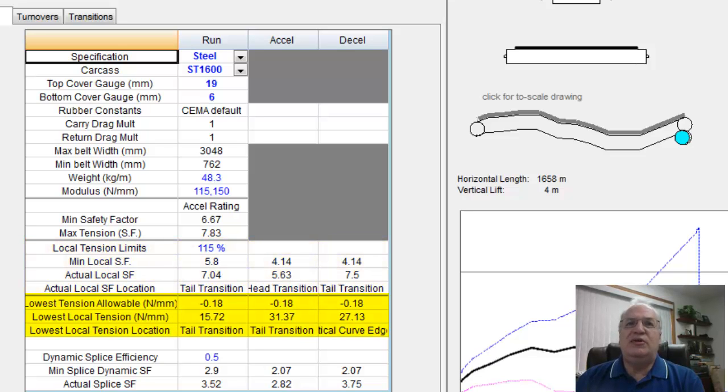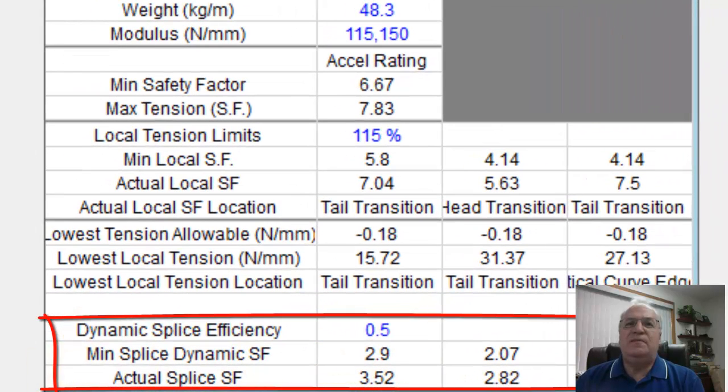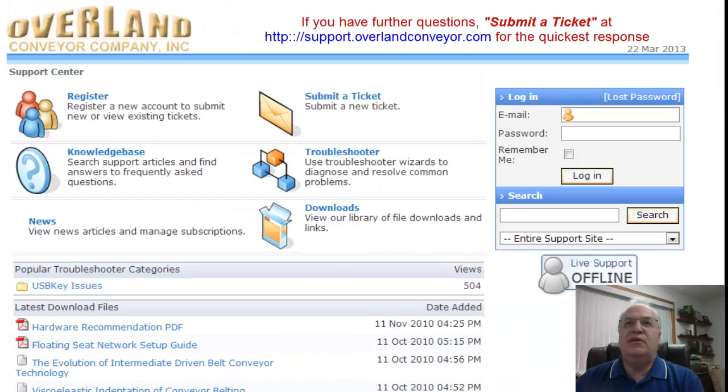Then we get into the local tension limits, 115%, the minimum safety factor and then the actual safety factor and the low tension numbers. And we also show where those locations are. In this case, tail transitions, head transitions, vertical curves, it highlights where those low tension areas or high tension areas are. And then finally, the bottom of the screen, the dynamic splice efficiency, the minimum splice safety factor that we'll allow in this particular case as a user and the actual splice safety factor. So if any of the actual numbers actually get lower than the allowable, they'll turn red and you'll see them be flagged. For further questions, submit a ticket at support.overlandconveyor.com for the quickest response. Thank you.